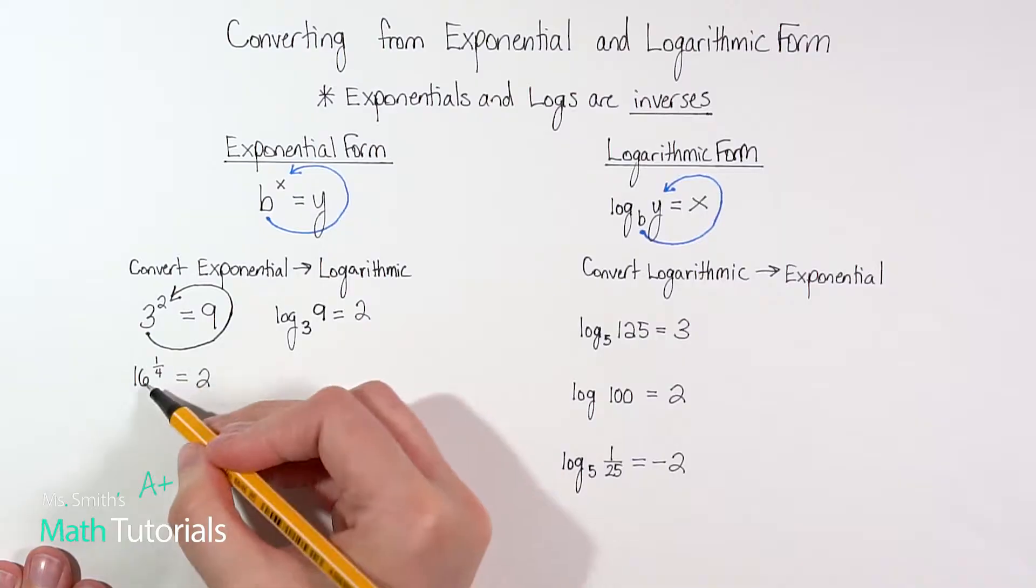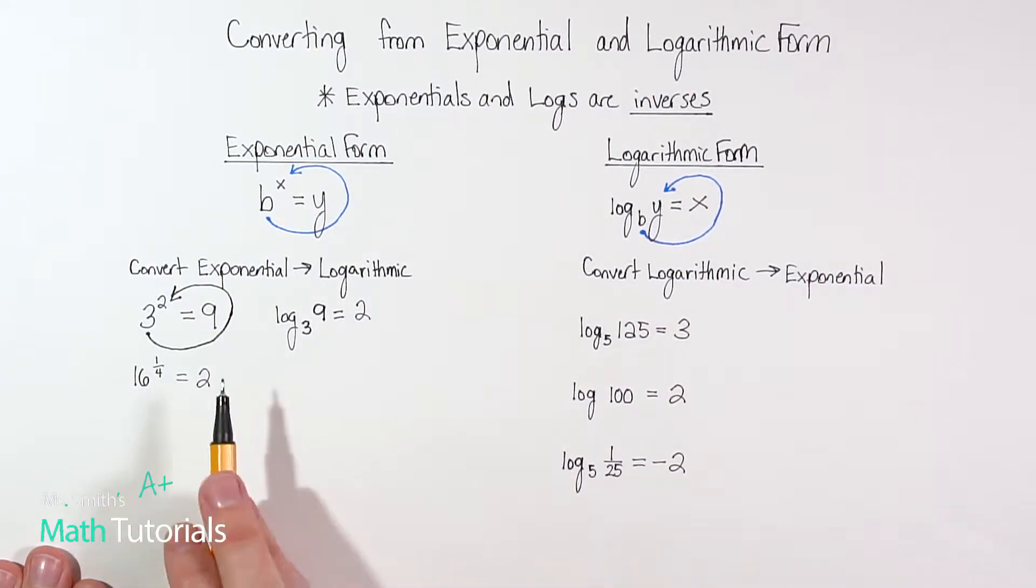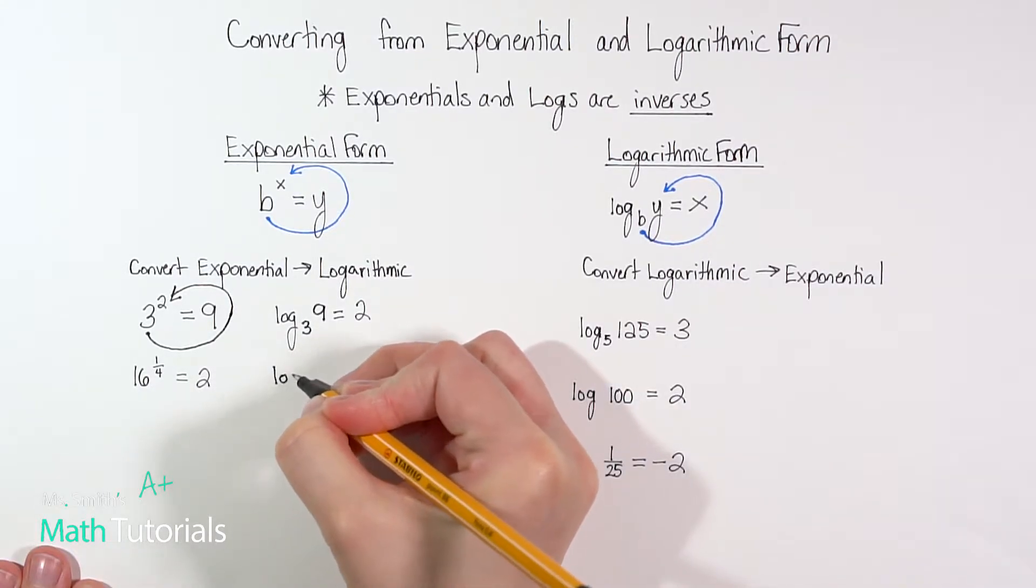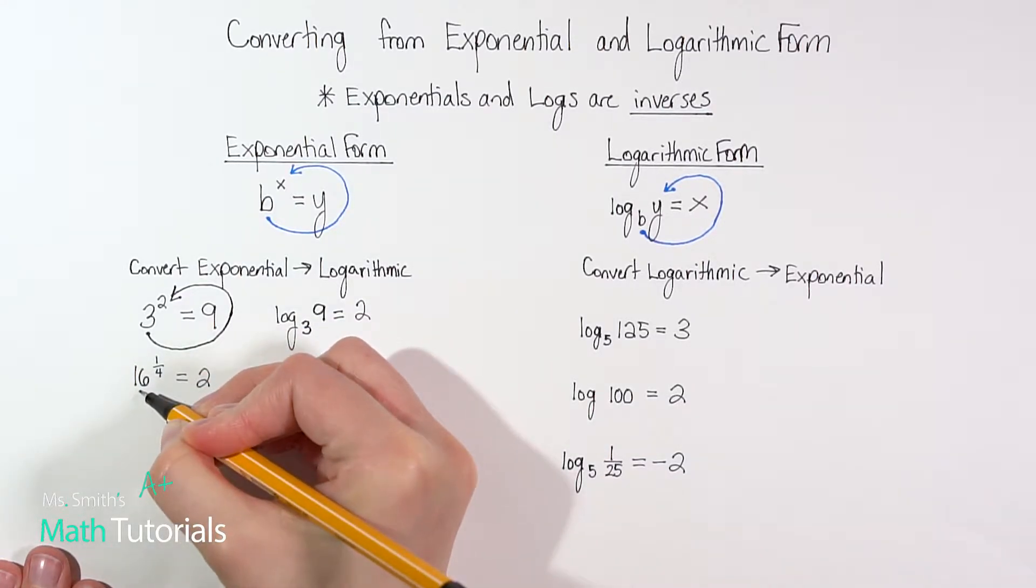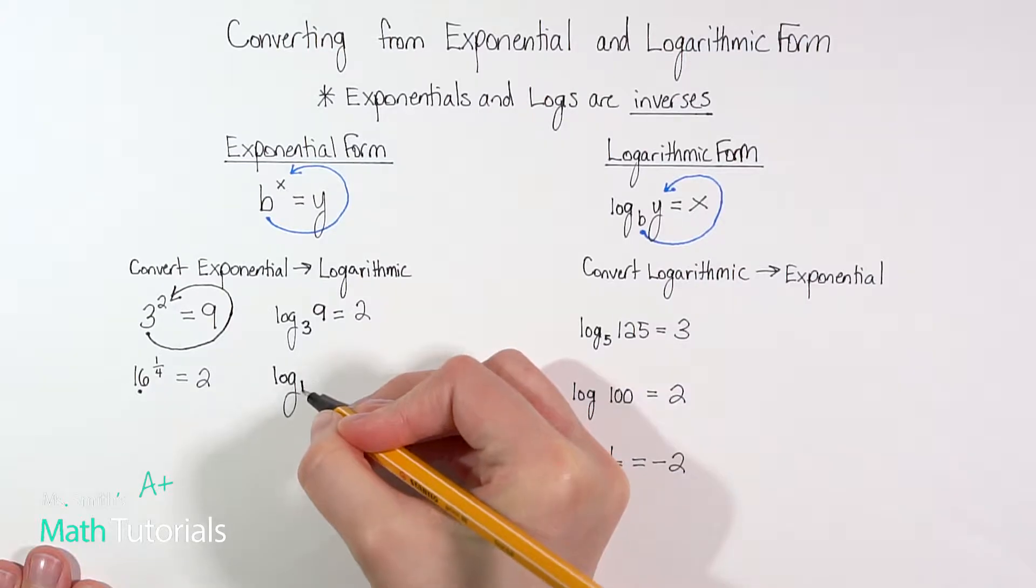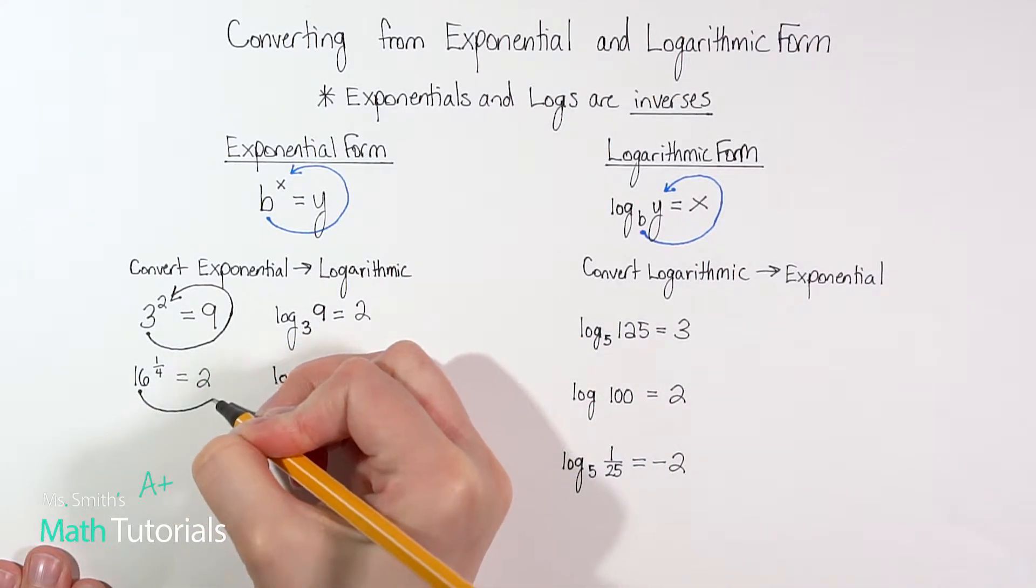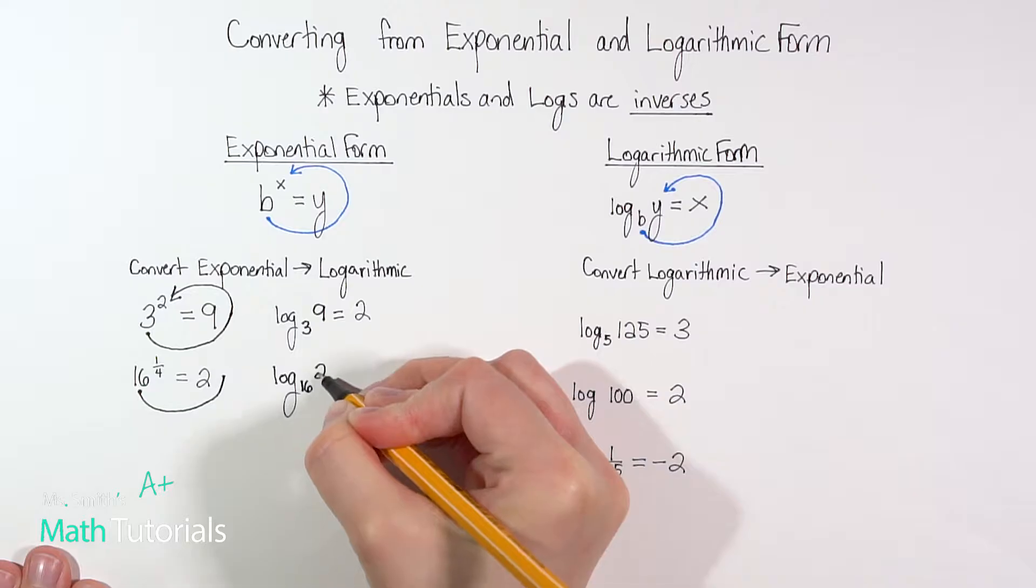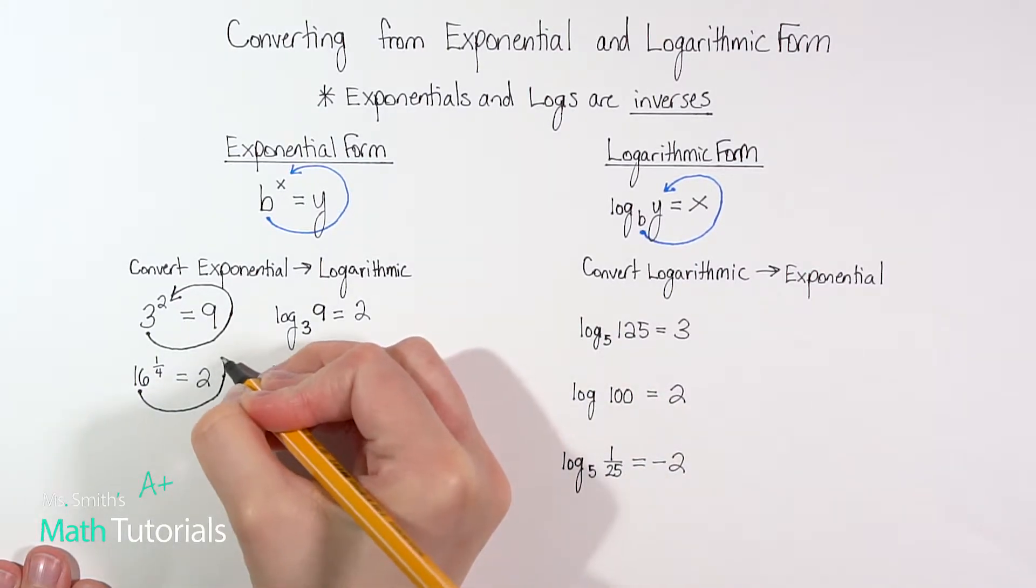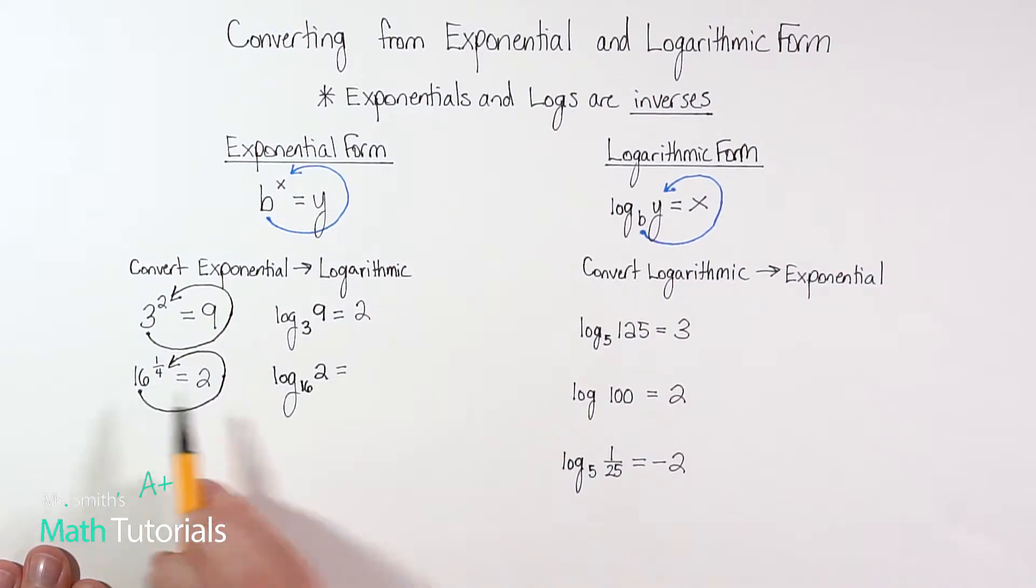So let's do the same thing with this 16 to the one-fourth power equals two. We're going to go from exponential to log. Notice exponentials have the exponents in them. We want to take it into log form. So the first thing I'm going to do is write the word log. Next thing I do is the backward c. So the place I start, the most left place is 16, so that tells me my base 16. When I do my c, the next place I hit is two. So log base 16 of two equals, and then I keep curving around, and where's the last place I end up? One-fourth. So again, we read this as log base 16 of two equals one-fourth.